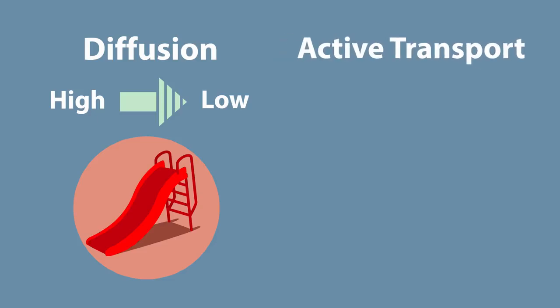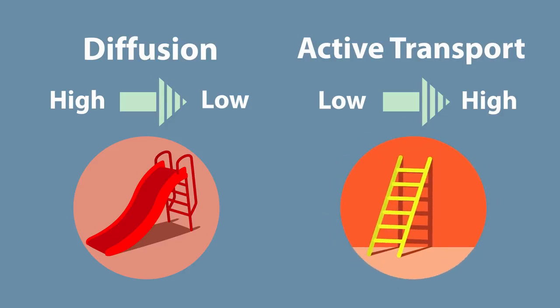Whereas active transport is the opposite. The substance needs to move up the concentration gradient from a low concentration to a high concentration. Think of climbing a ladder. You need energy to go from low down to high up.